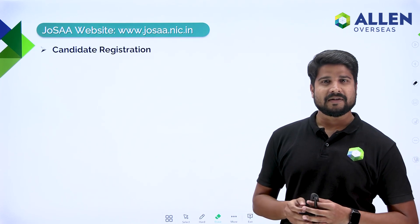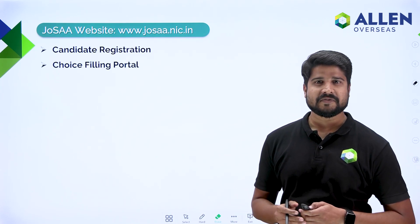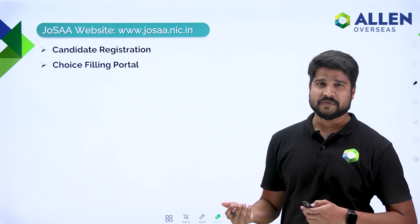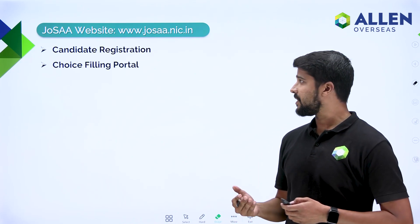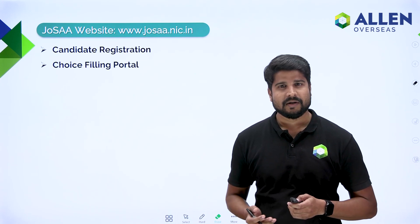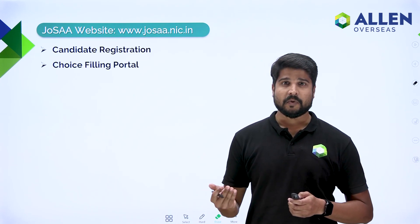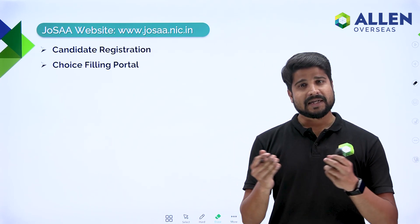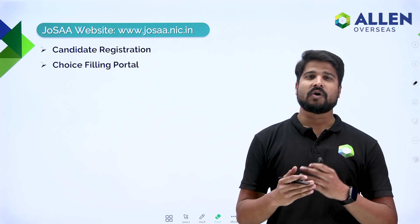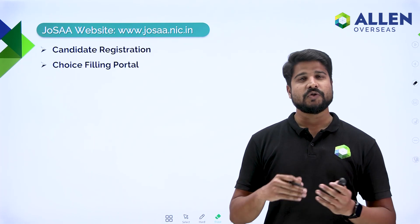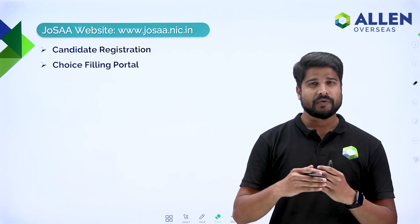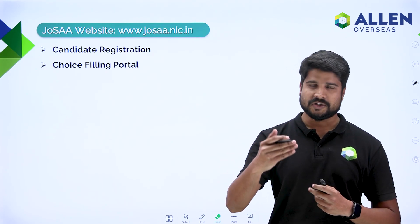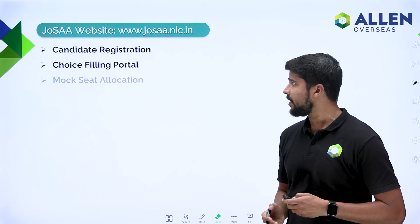From there, the candidate has to register themselves by providing their JEE application number and password. After that, the choice filling portal will open. In this portal, you will have to provide your choices in decreasing order — in which college and which seat you want to study — according to your preferences. This is called the choice filling portal.